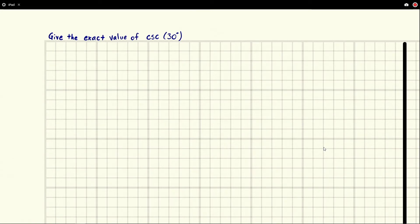Eric Burgess here and we've been asked to give the exact value of cosecant of 30 degrees. Cosecant is the reciprocal of sine, so we could figure out 1 over sine of 30 degrees a lot easier because sine is easily defined.